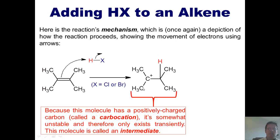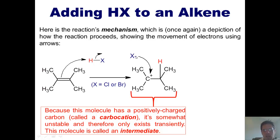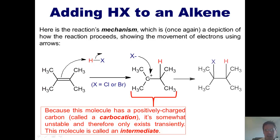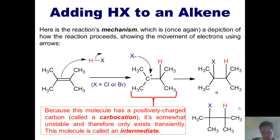The X atom stole those two electrons and walked away, becoming X⁻. It then takes those two electrons and plugs them right into the hole, forming a bond with the carbocation, which gives us our final product, drawn more simply like this.